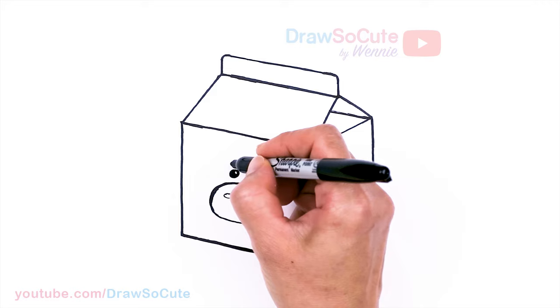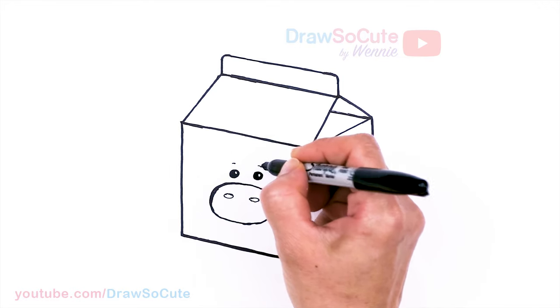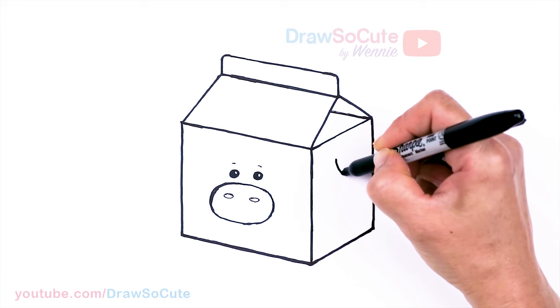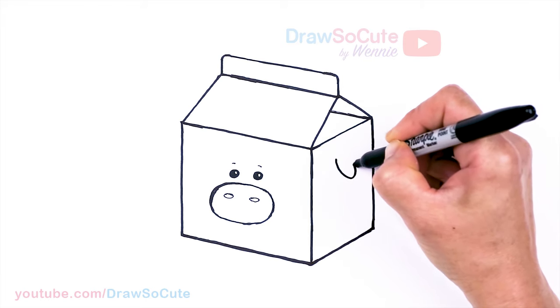And then we can pop in some eyes. So right here, let's just make it really simple. Two little dots. And notice it's also at this angle. Pretty cute, right? Hopefully. I'm just going to draw two little lines over the eye.